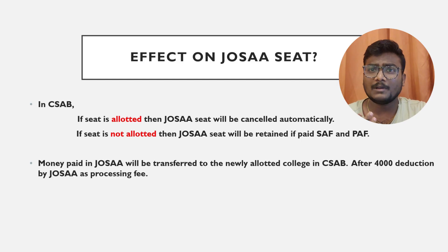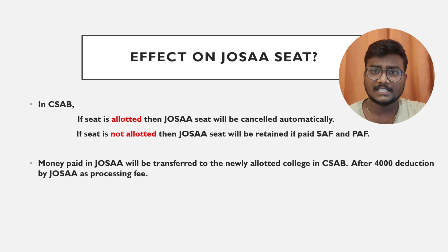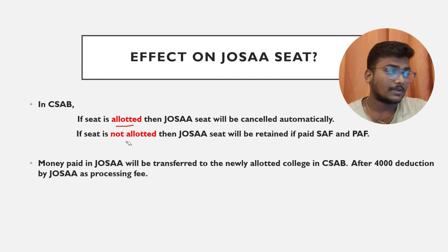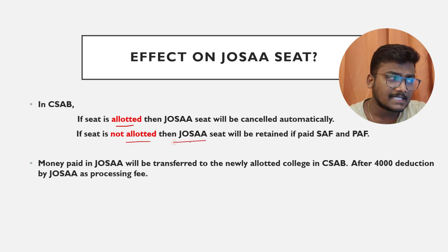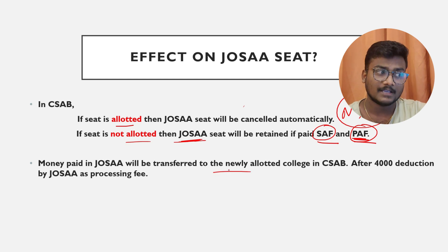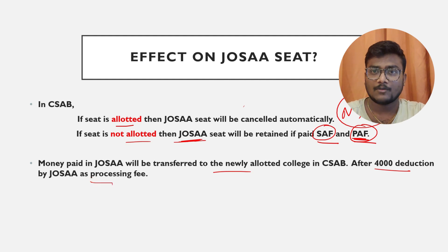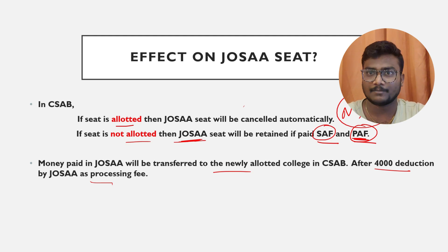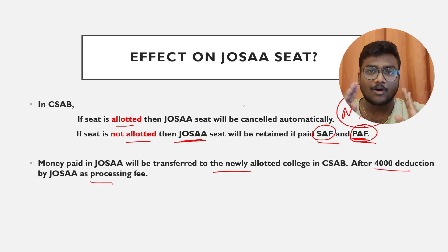Many people are confused about the effect of CSAB on their JoSAA seat. If you register for CSAB and a seat is allotted, your JoSAA seat will be cancelled automatically — you cannot go back to it. If you don't get any seat allotment in CSAB, your JoSAA seat will remain only if you completed both seat acceptance fee payment and partial admission fee payment. Money paid in JoSAA will be transferred to the newly allotted college in CSAB after a deduction of ₹4,000 as a processing fee by JoSAA.